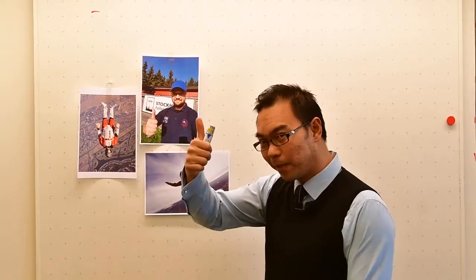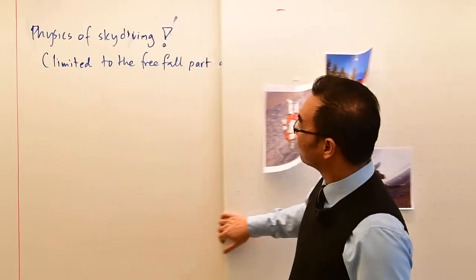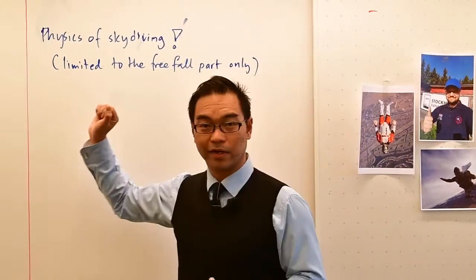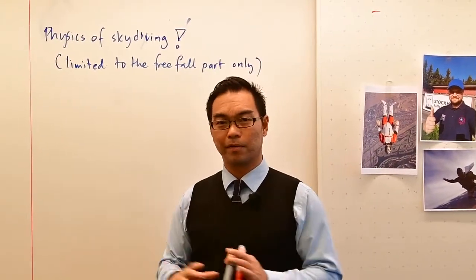The man you see right here with a thumb up is Mr. Hendrik Reimer, the Swedish and world champion in speed skydiving. I'm not going to focus on speed skydiving basically, just talking about skydiving. But the part I'm going to talk about today is the free fall part of skydiving.